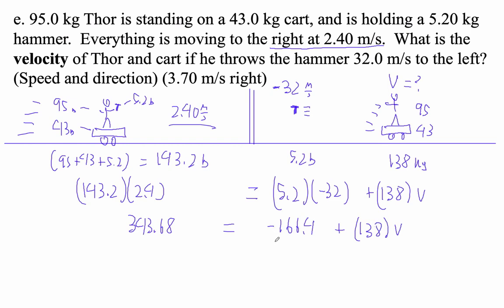So I'm going to add this to both sides. So I'm going to go plus 166.4. If I add that to that side, that goes away. So 343, that guy, plus 166.4. We get 510.08 equals 138 v.